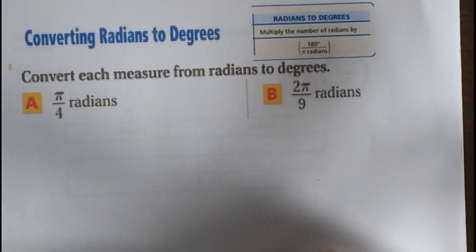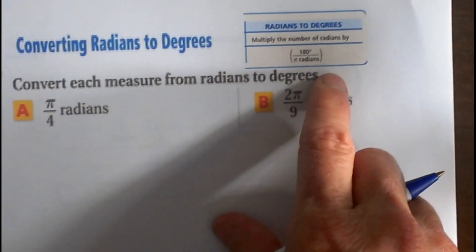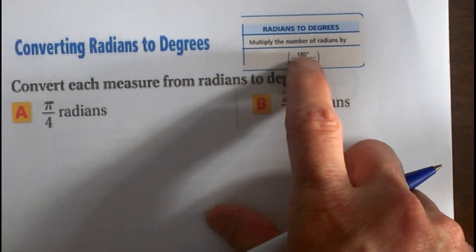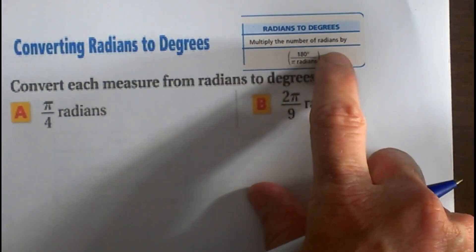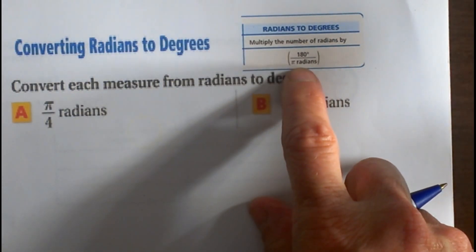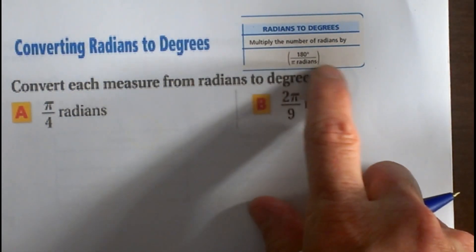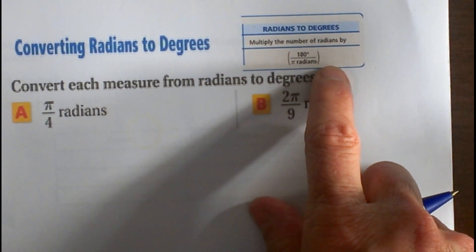Converting radians to degrees, we are going to take that same ratio and just flip it. So we are going to have 180 degrees over pi radians.